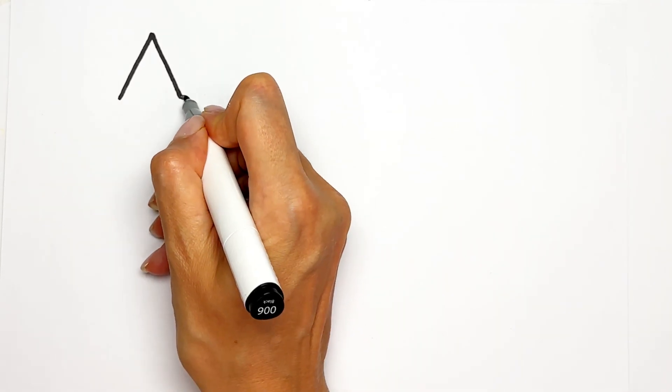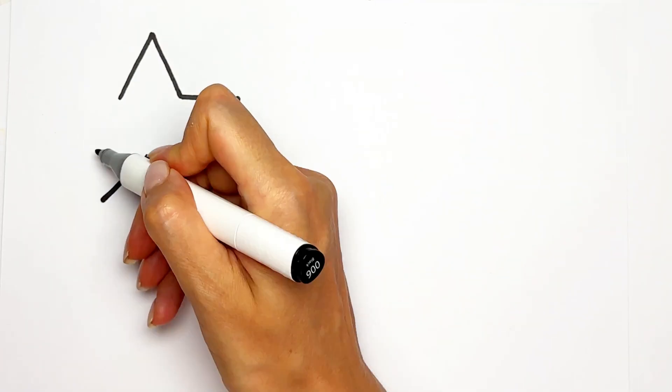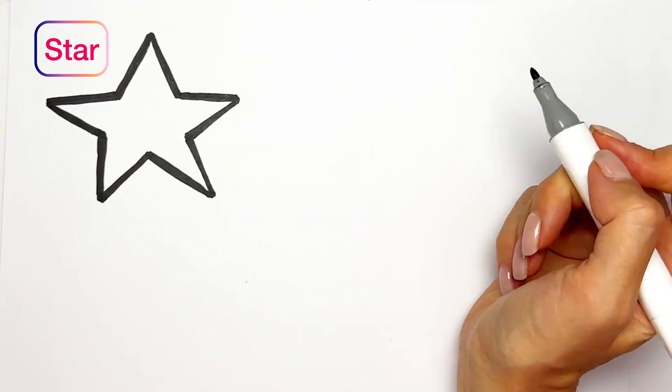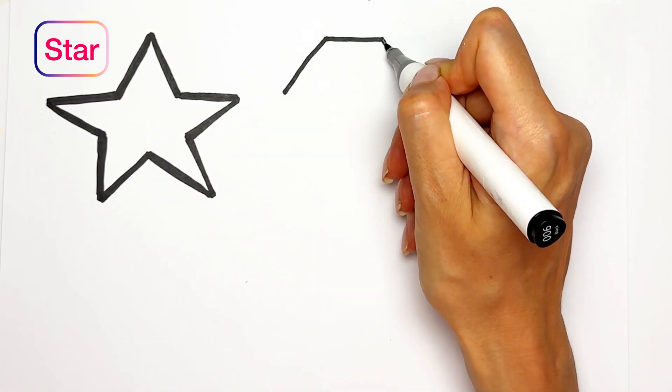Today we're drawing shapes. First one is star. Then hexagon. Hexagon has six angles.